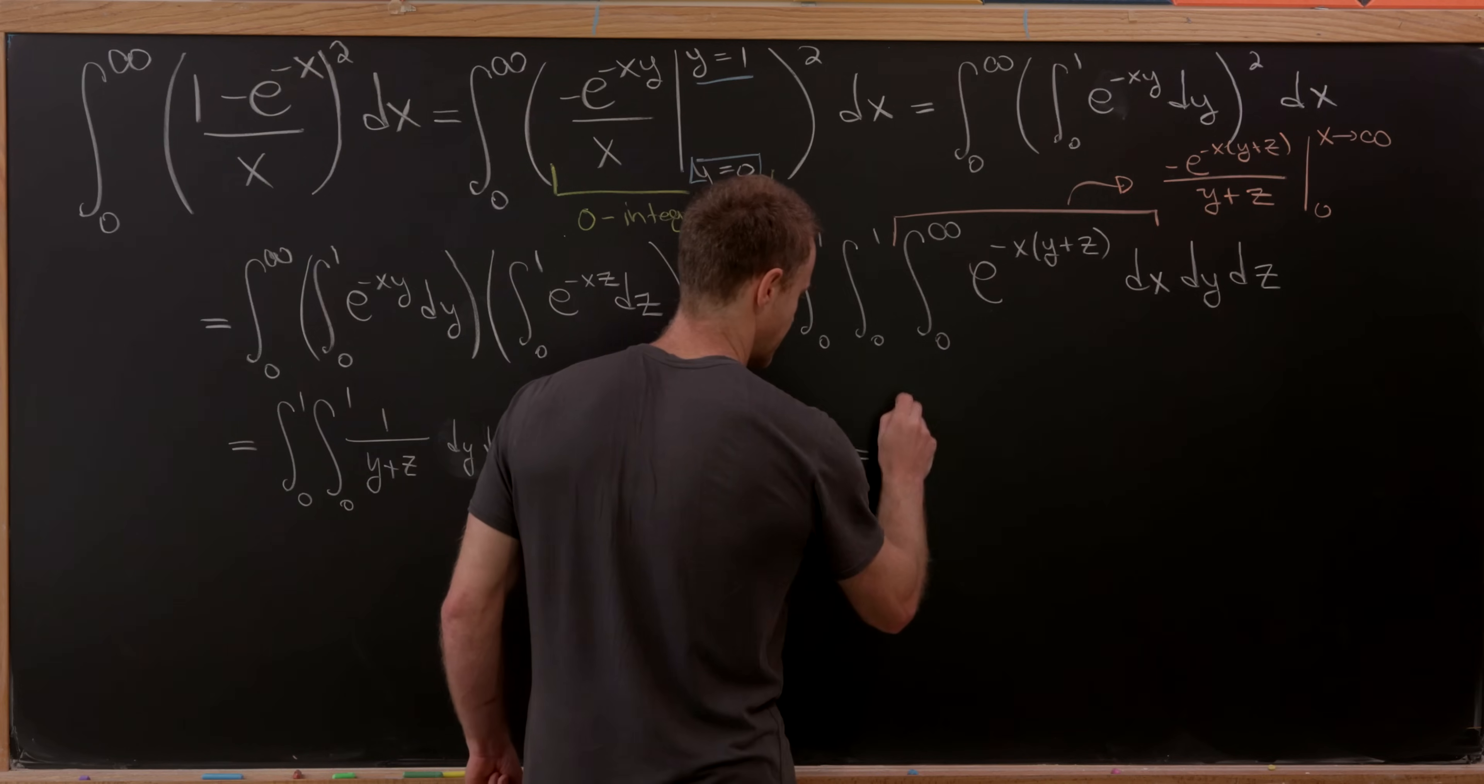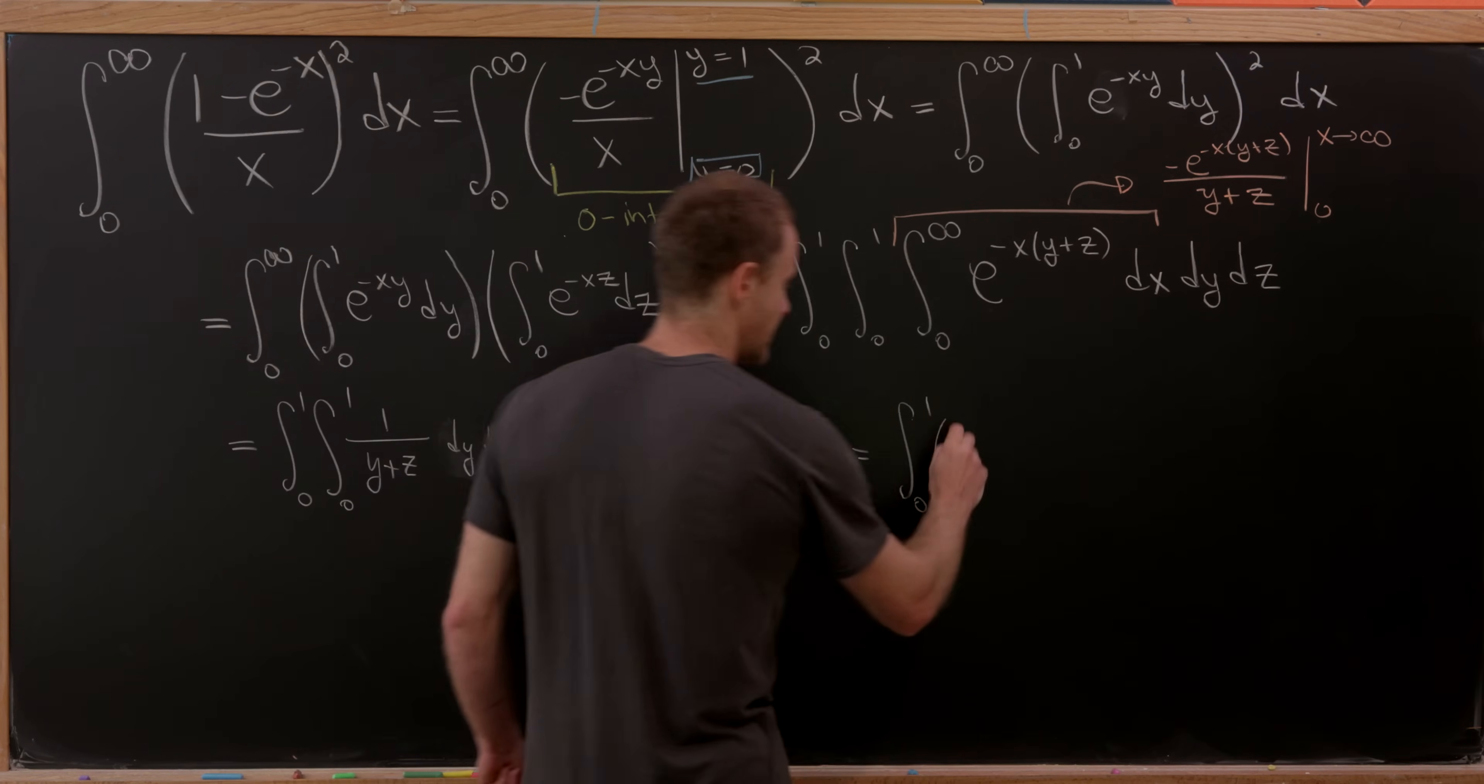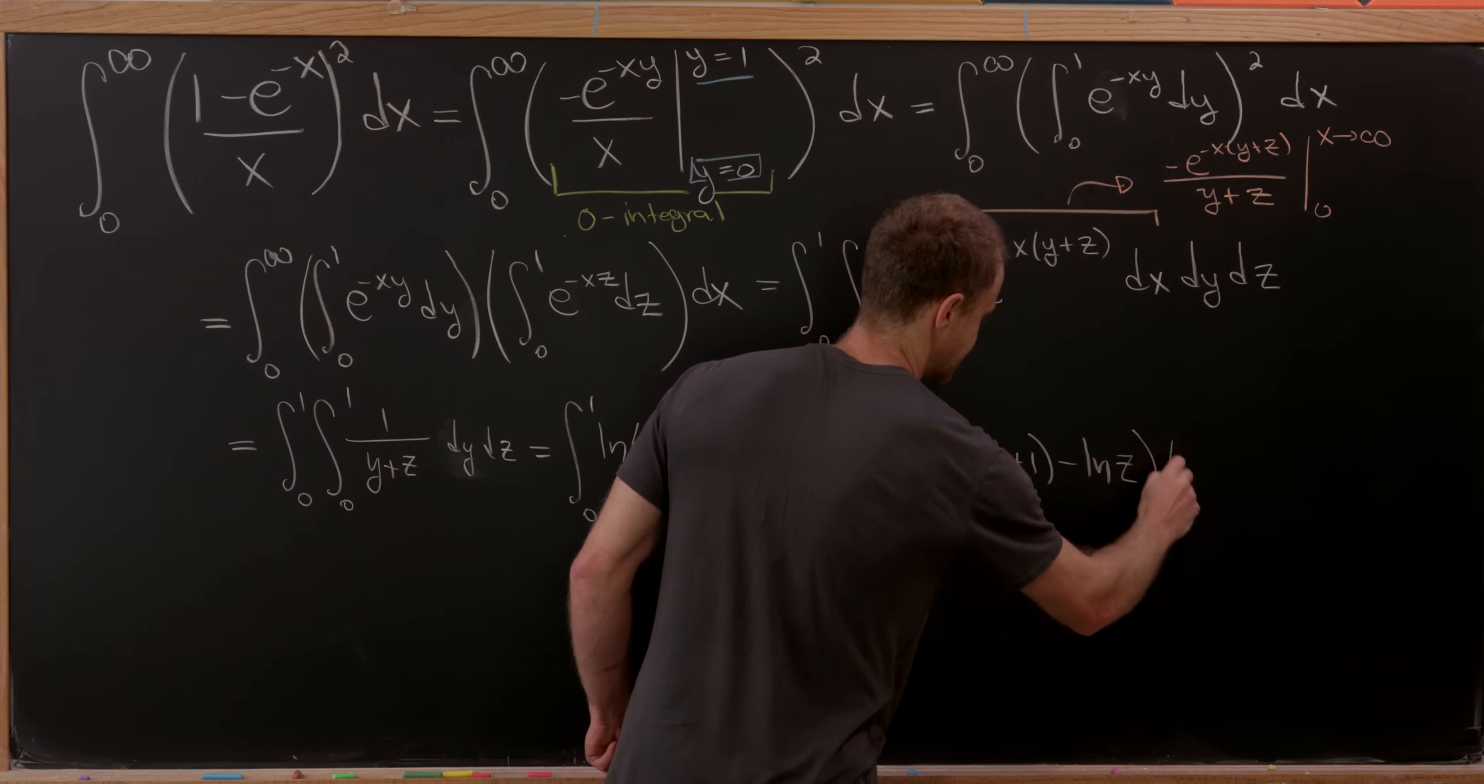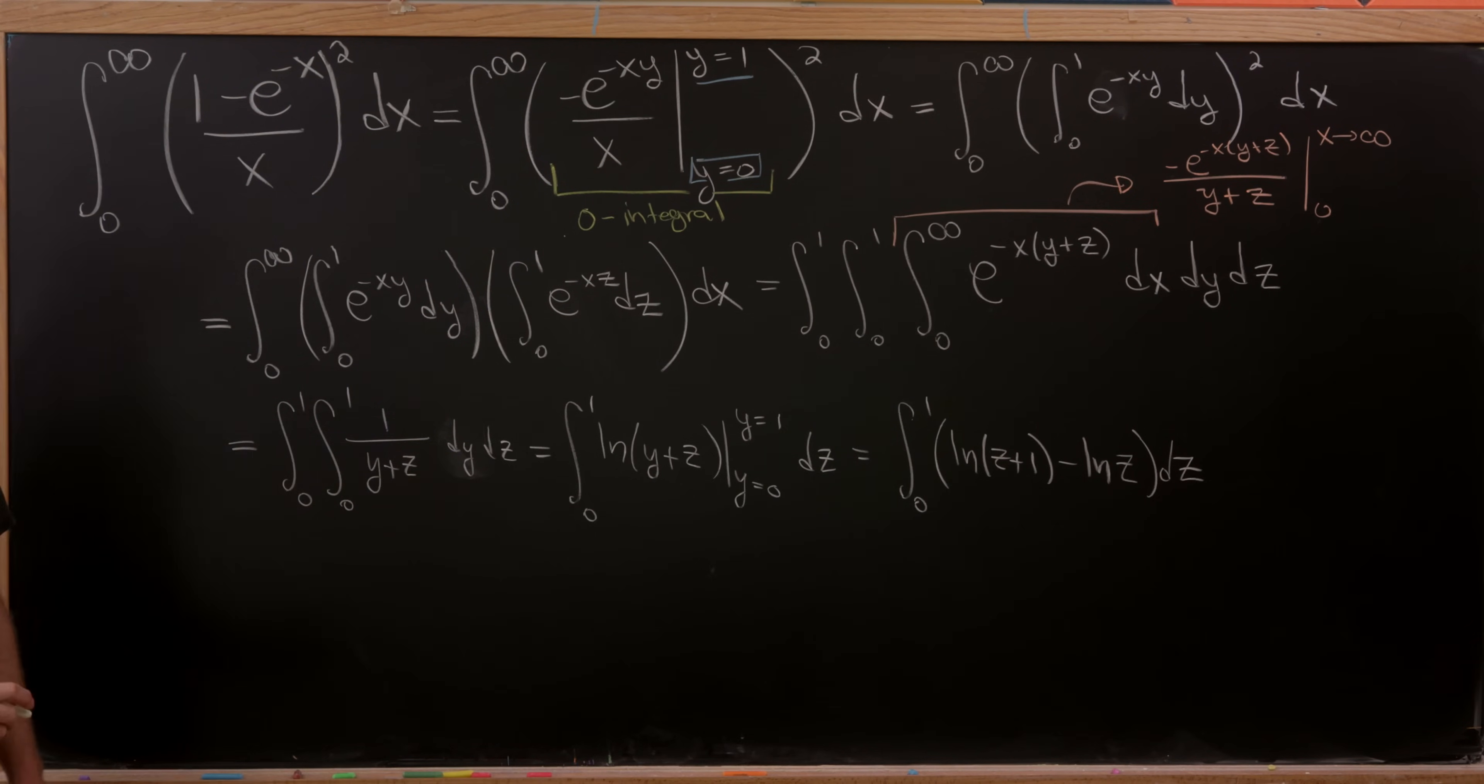But what's that going to leave us with? We'll have the integral from 0 to 1 of the natural log of z+1 minus the natural log of z dz. So we've got something like that going on.